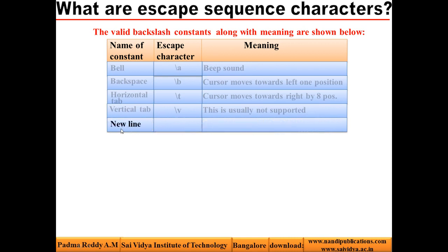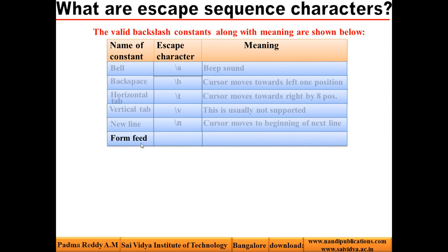Look at the next constant: new line. It is denoted by \N. When printed using printf function, the cursor moves to the beginning of the next line. Consider this constant: form feed. It is denoted by \F. When this is printed using printf function, the cursor moves to the next page.